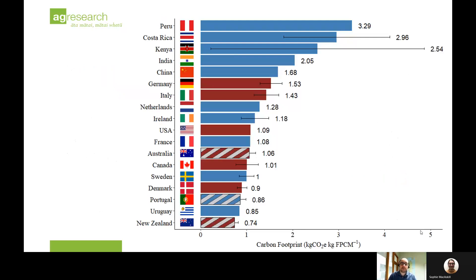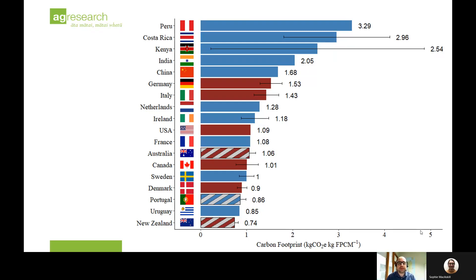The final results are shown in this figure, and there are several things to unpack. These are the recalculated footprints considering all the differences between the studies. We see that New Zealand is at the bottom with the lowest carbon footprint at 0.74 kilograms of CO2 equivalents per fat and protein corrected milk. You'll also notice different colors of bars — blue bars and red ones.